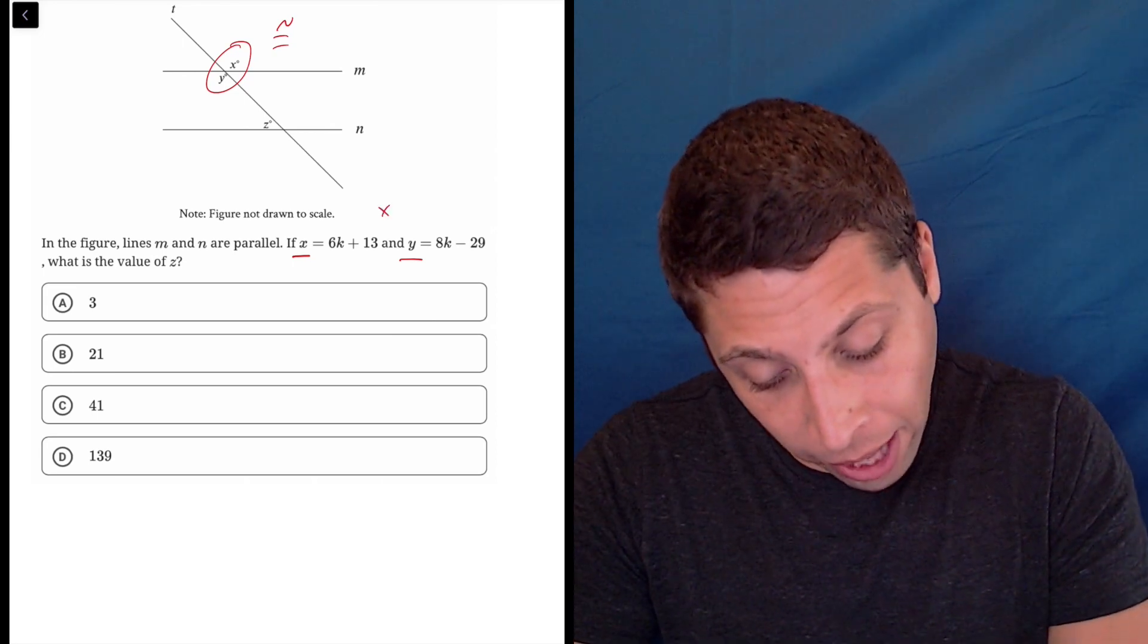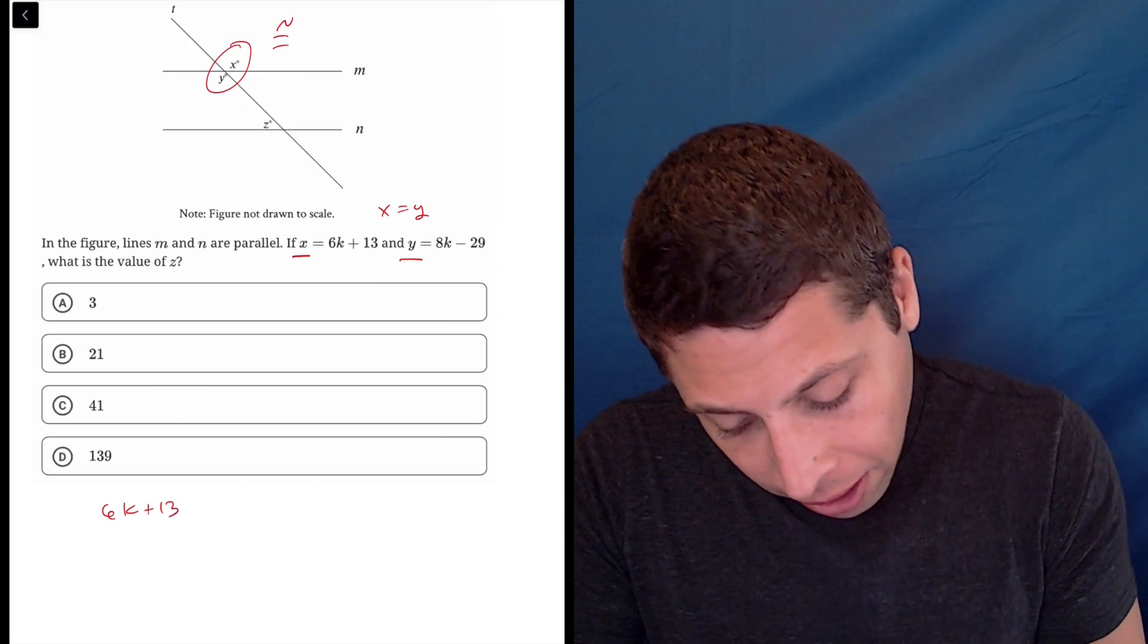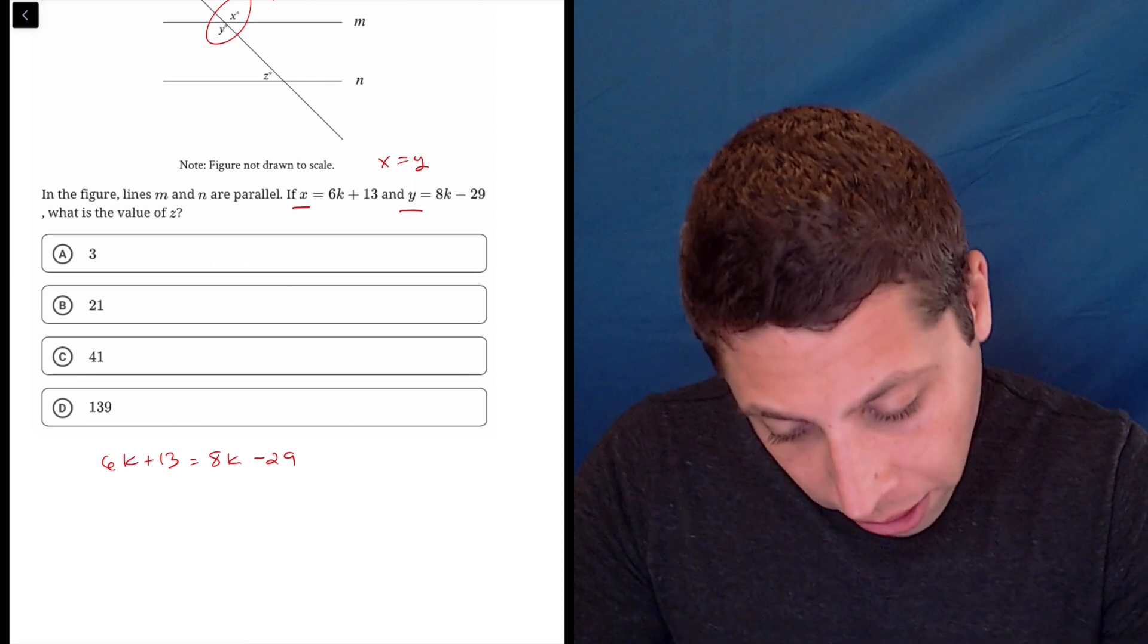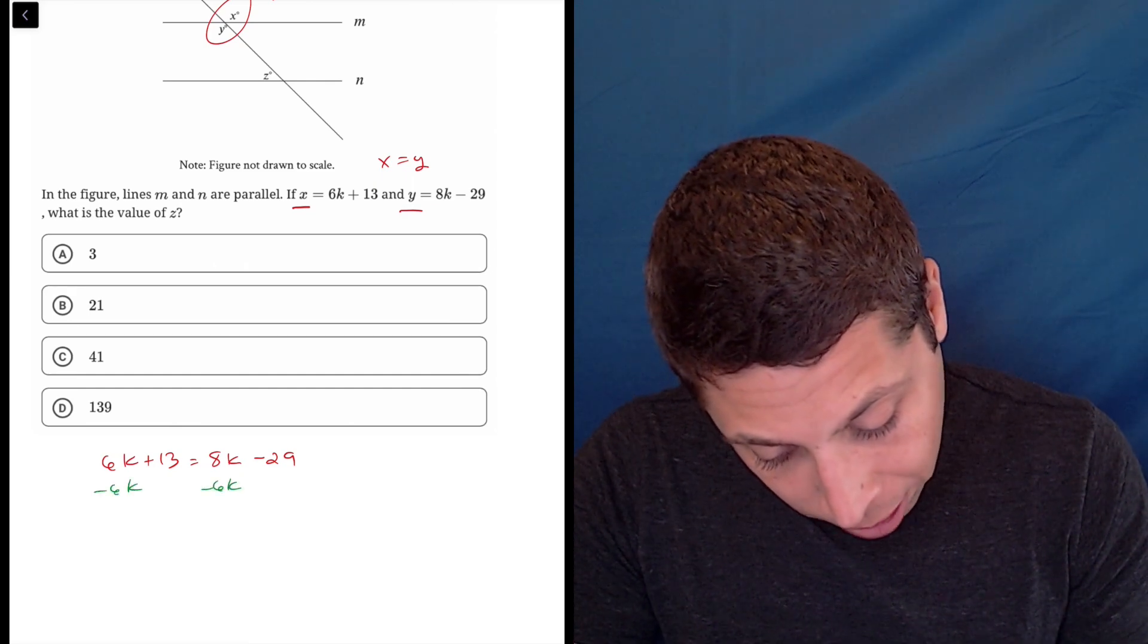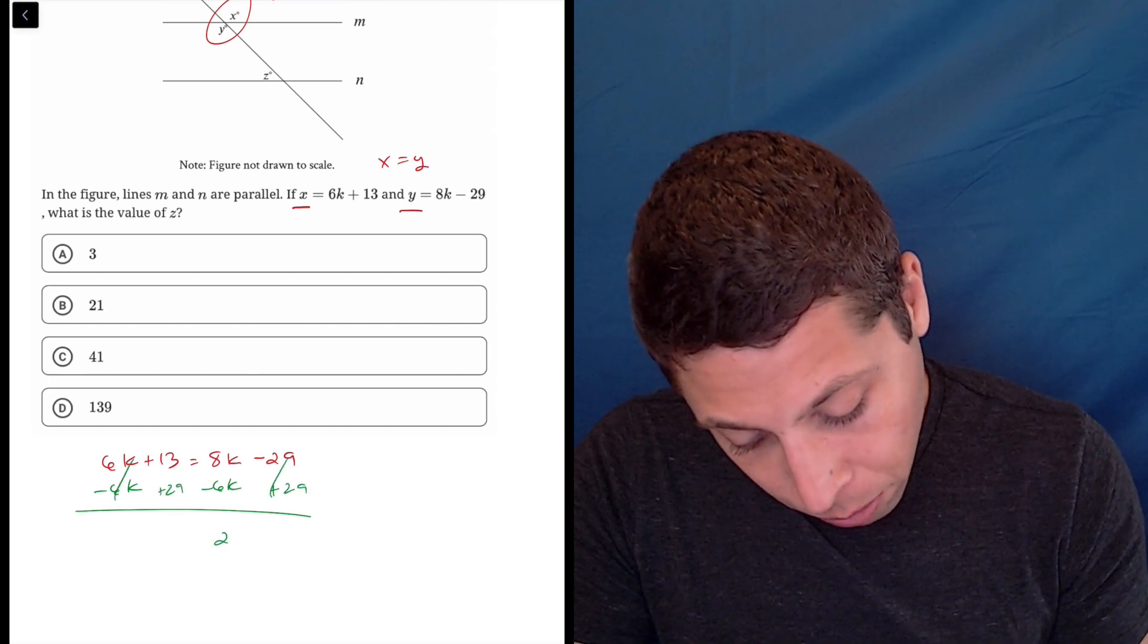So I'm going to set these two things equal to each other. X is going to equal Y, so 6K plus 13 is equal to 8K minus 29. You can do this with the calculator, but I think it's actually faster just to do the normal algebra here. So minus 6K, add 29, this goes away, this goes away.